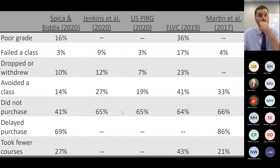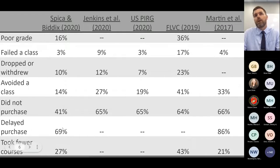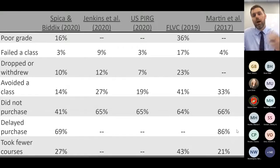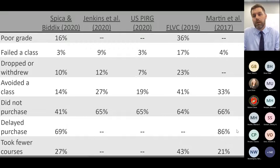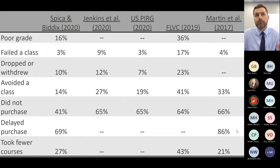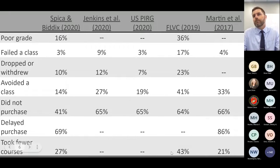Two thirds of students are choosing not to purchase books. When we look at delaying purchase, a lot of students are selecting to wait and see if books are going to be actually used in class. We talk a lot about day one access. Day one access to instructional materials is incredibly important to student success. These are significant statistics that are worth keeping in mind.